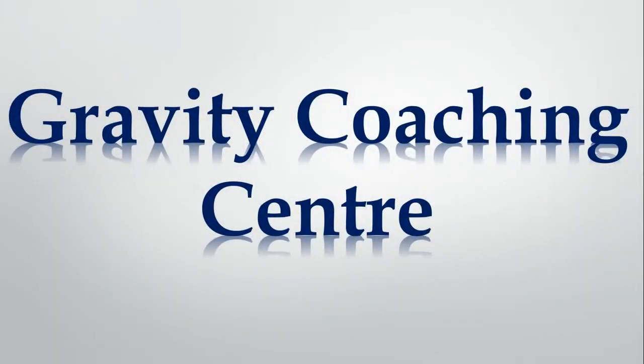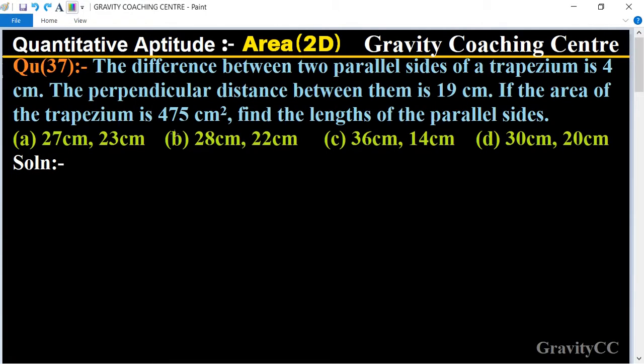Welcome to our channel Gravity Coaching Centre, Quantitative Aptitude chapter Area, question number 37. The difference between two parallel sides of a trapezium is 4 centimeter. The perpendicular distance between them is 19 centimeter. If the area of the trapezium is 475 centimeter square, find the length of the parallel sides.